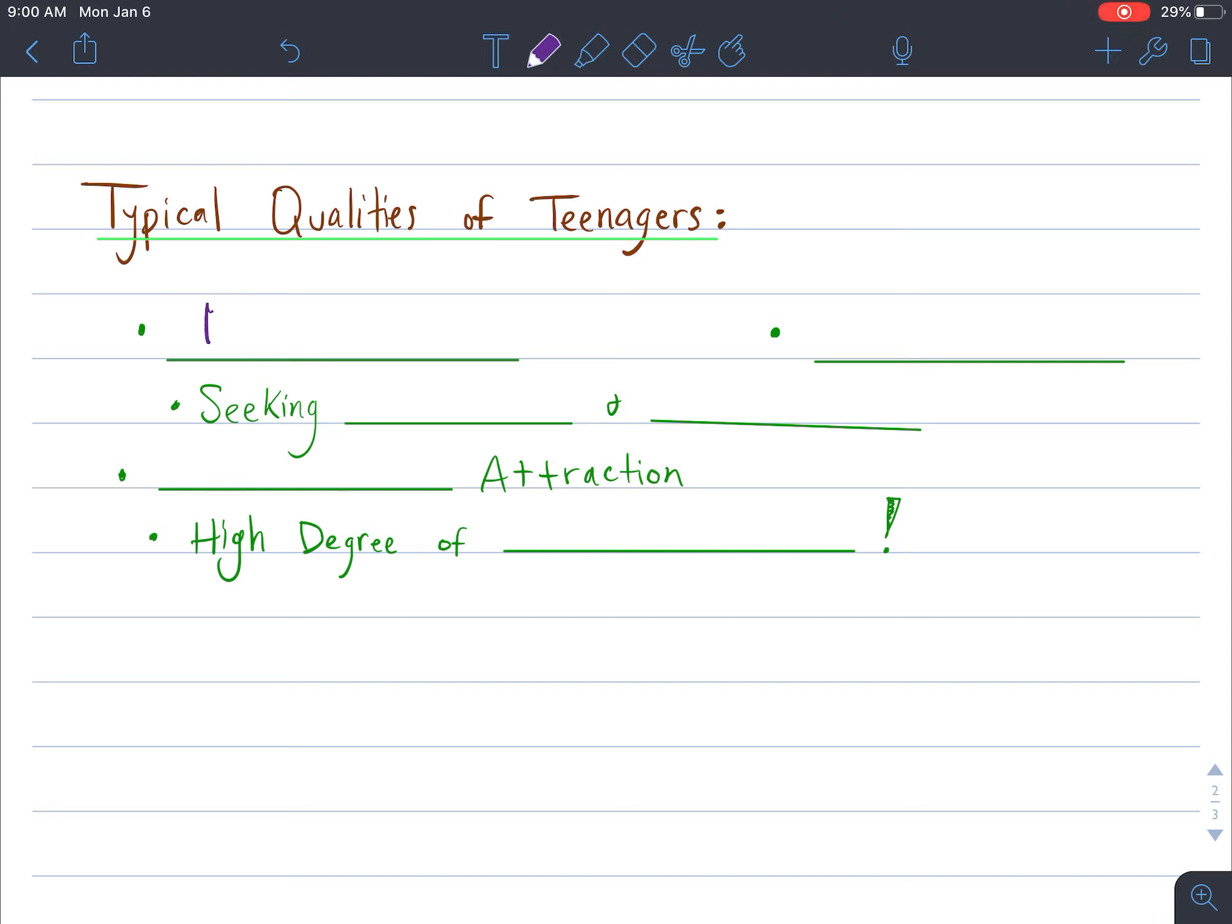Usually teenagers have some type of risk-taking tendency. They enjoy taking risks. They are also highly involved in social networking or developing their social network, and this doesn't mean that they're on social media, but they're typically trying to network with one another.